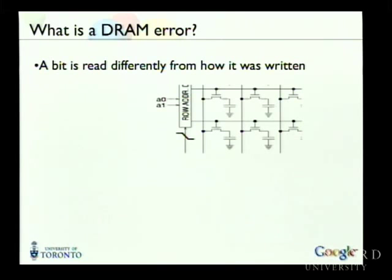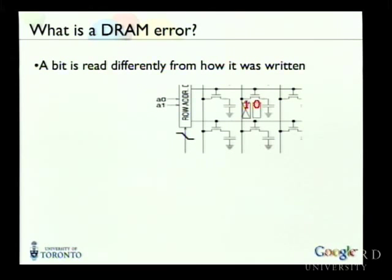Before talking about actual errors, what do we mean by a DRAM error? For the purpose of this talk, a DRAM error is any situation where you write a bit into a memory cell — say you write a one — and when you access it later, your one has suddenly become a zero.